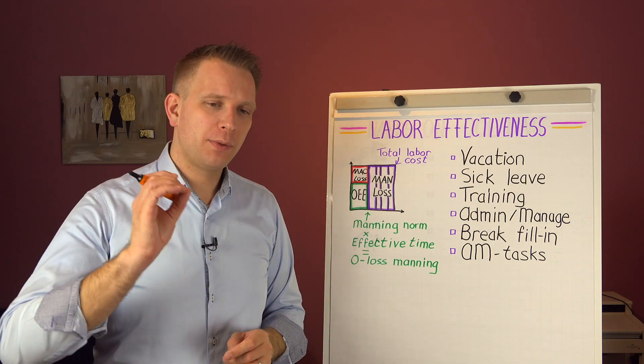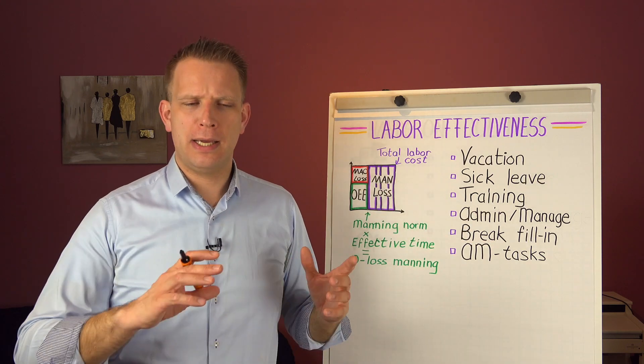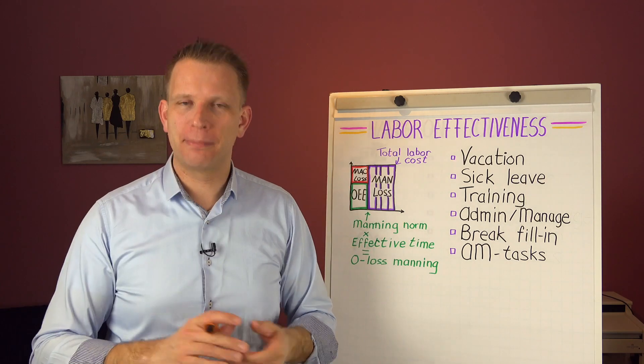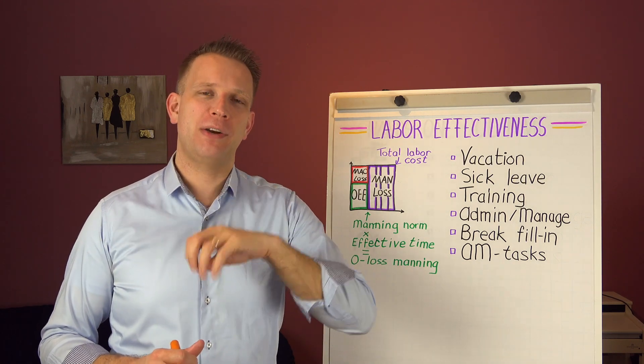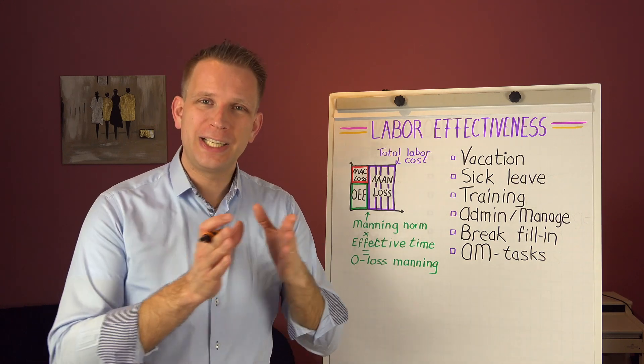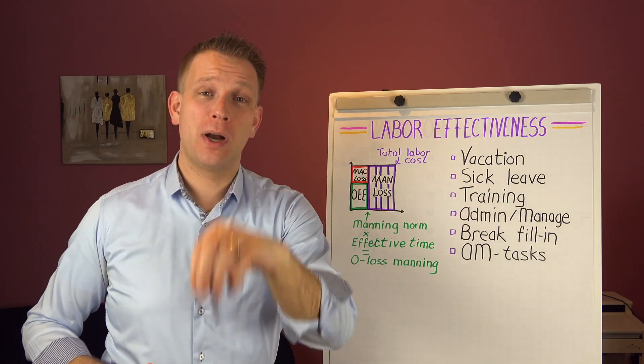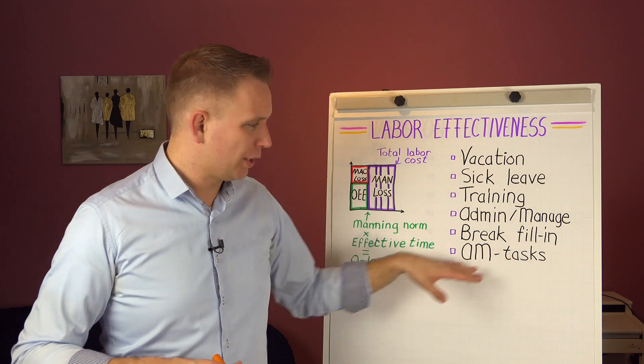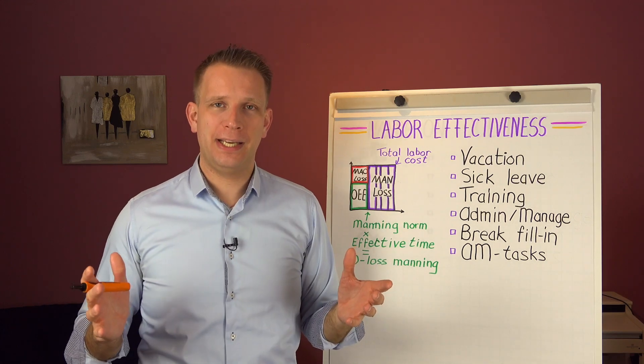But the thing is, when you just say we've got one supervisor, that's an extra, and then we have 20% of vacation, sick leave, absenteeism in general - you are missing very good opportunities to optimize your total labor spend. Really splitting it out into also the training hours, all kinds of admin and management tasks that you ask operators to do. Do we have people taking over machines, doing AM tasks? Because this means if we have it, then there is capacity in the labor pool.